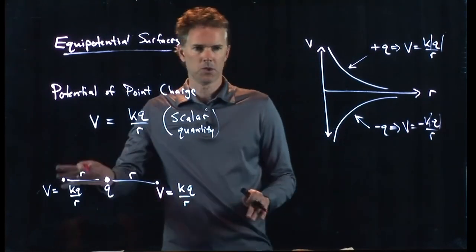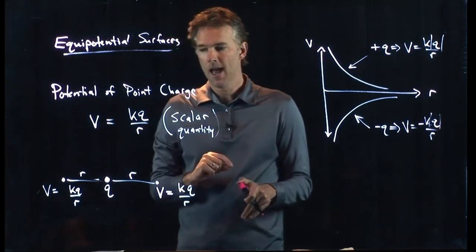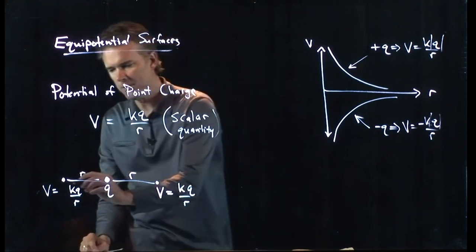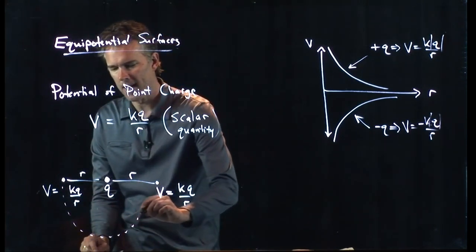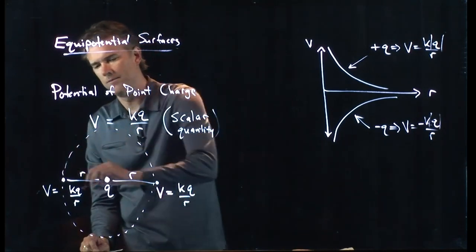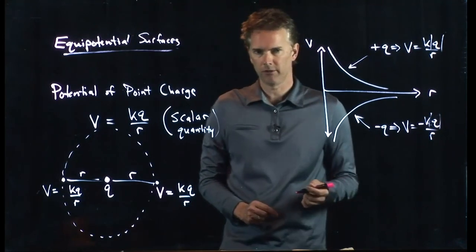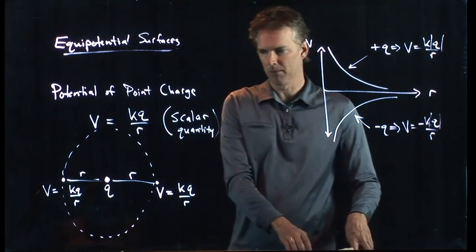And now by symmetry, I could put my point anywhere around this thing. And if I'm always at the same distance R away from it, then it's always going to have the exact same potential. And this is the idea with an equipotential surface. It's where the potential is always equal. It's always the exact same thing.